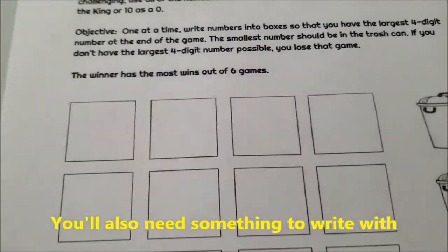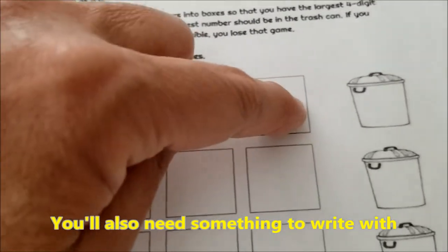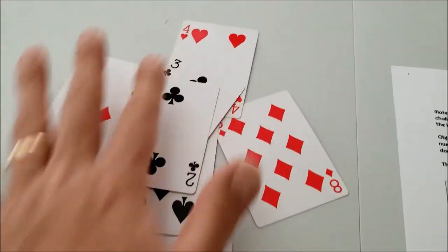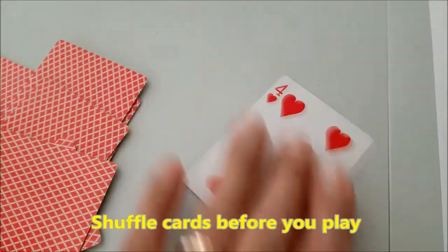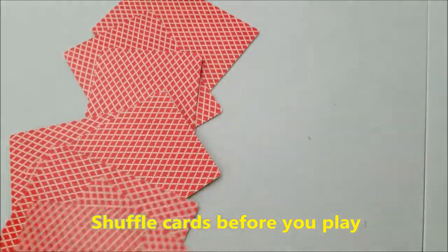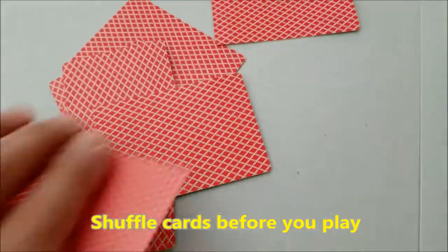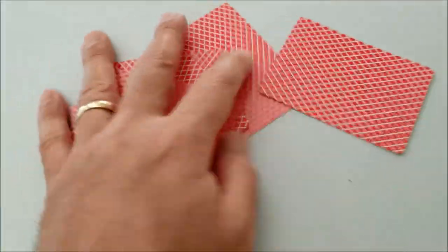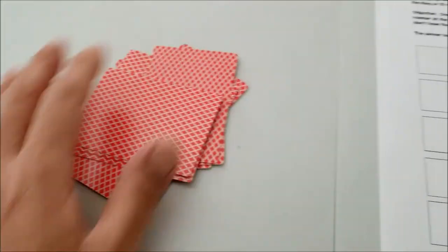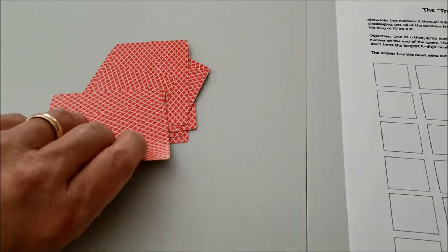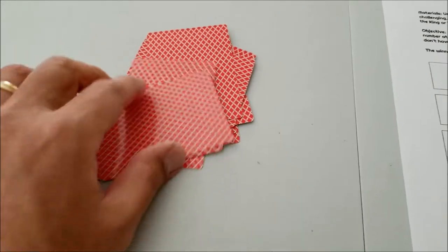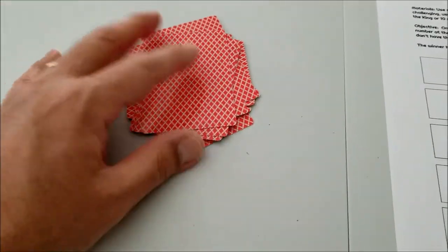So basically a game will consist of four boxes and a trash can. So what we're going to do is we're going to take all of these numbers and we're going to flip them over so we can't see it. Nobody is supposed to know what any of these numbers are going to be. We're going to want to shuffle them. We're going to want to make it so that nobody knows what card's going to get picked. So here's basically how you play.